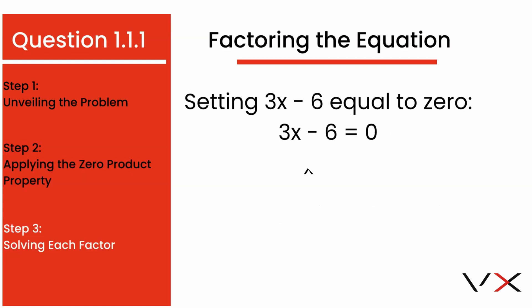Firstly, set 3 times x minus 6 equals to 0. What's our next step? Simply add 6 to both sides to balance out the equation, which then gives us 3 times x equals 6. Now let's find x by dividing both sides by 3, and there it is.